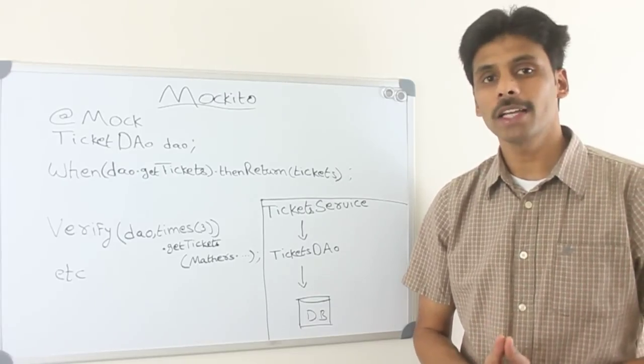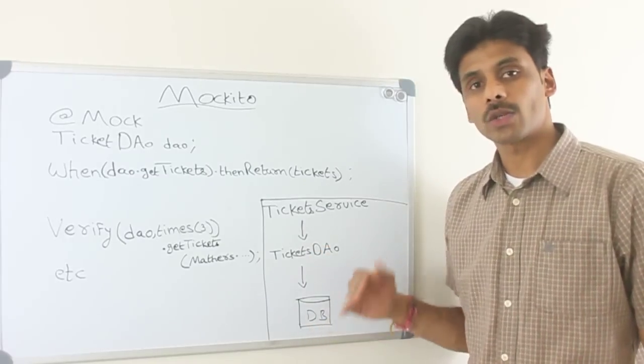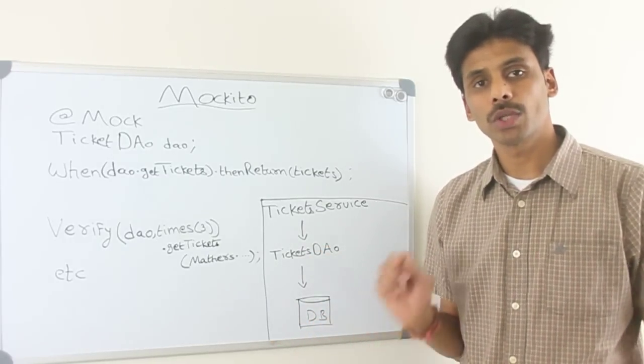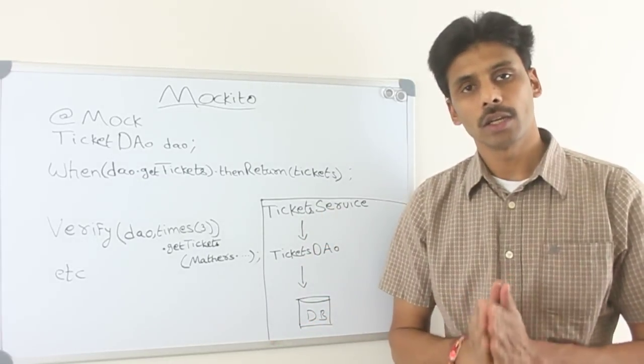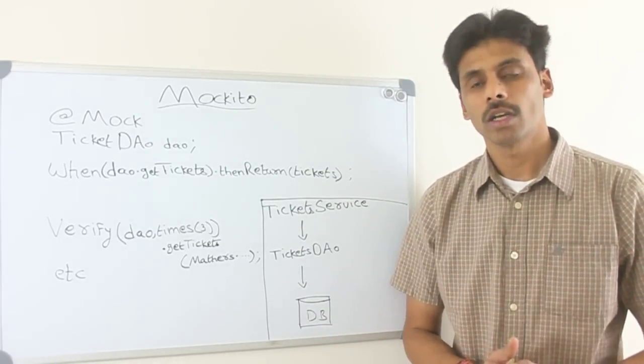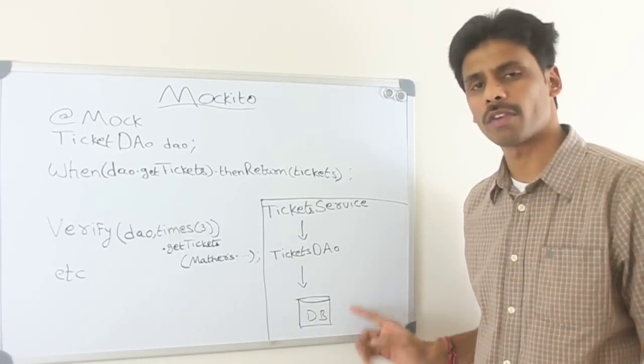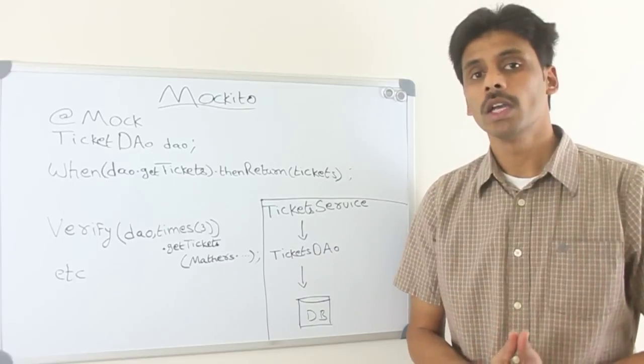So to quickly summarize, mocking frameworks allow you to mock out the various layers or classes and objects in your application, so that you can test a particular class as a unit in isolation, which is a real good unit test, otherwise it will become a system or integration test. You need not worry about configuring the database, etc., when you do unit tests.